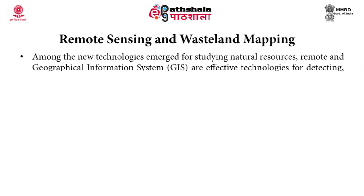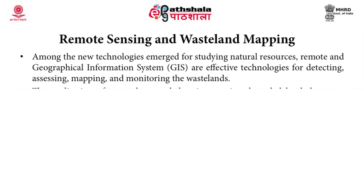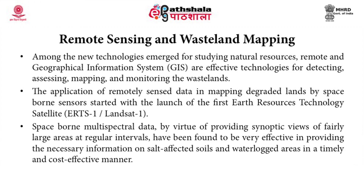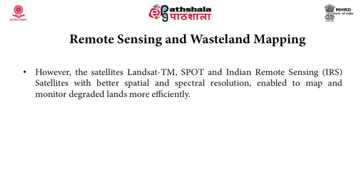Coming to how remote sensing can help in wasteland mapping, among the new technologies that have emerged as important tools are remote sensing and geographical information systems. They help in detecting, assessing, mapping and monitoring these wastelands. The application of remotely sensed data in mapping degraded lands by spaceborne sensors started with the launch of the first earth resources technology satellite, popularly called Landsat 1. Spaceborne multispectral data, by virtue of providing synoptic views of fairly large areas at regular intervals, have been found to be very effective in providing necessary information on salt affected soils and water locked areas in a timely and cost effective manner. Satellites such as Landsat thematic mapper, SPOT and Indian remote sensing satellites with better spatial and spectral resolution have enabled more efficient mapping and monitoring of these degraded lands.